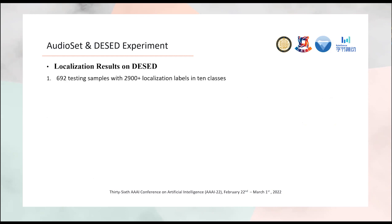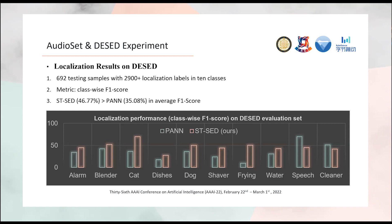We also test our model on the localization dataset called DESED, which has 700 samples with strong localization labels in 10 classes. We use class-wise F1 score to evaluate performance. We train our model with only weak label data but output strong localization predictions. Our model achieves a higher average F1 score than the previous state-of-the-art PaNN. The diagram shows each class-wise F1 score, and we beat PaNN in many classes except speech and cleaner. This shows STSED is one of the best models to help process audio data for training the following separation models.